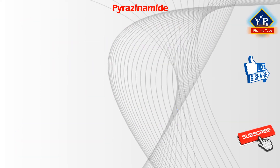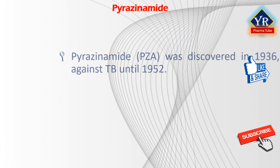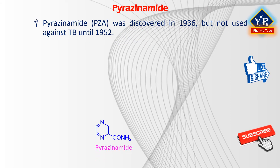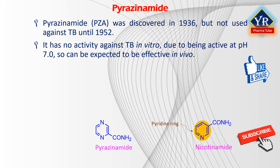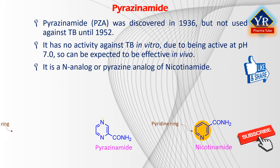The first drug of this lesson is pyrazinamide, abbreviated PZA. It was discovered and patented in 1936 but not used against tuberculosis until 1952. Its discovery was remarkable since it has no activity against tuberculosis in vitro, due to being active at a neutral pH, so it can be expected to be effective in vivo. However, nicotinamide was known to be effective for tuberculosis and pyrazinamide was thought to have a similar effect. Thus, it is the synthetic nitrogen analog, or pyrazine analog, of nicotinamide.